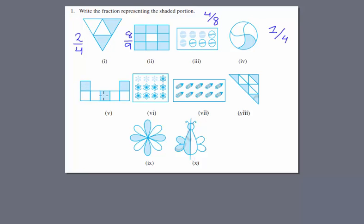Next we have three shaded portions out of seven, so three over seven. Next we have four shaded out of twelve — four times three is twelve — so nine over twelve.